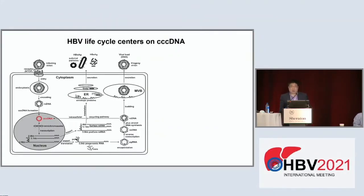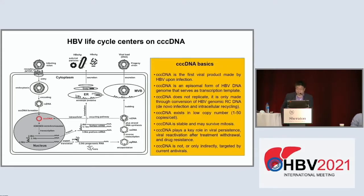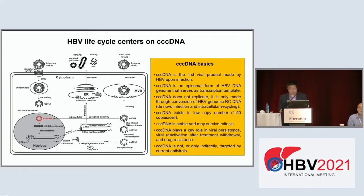As Thomas talked about this morning, cccDNA is the root of the HBV infection. To unroot the cccDNA, we start with cccDNA 101. cccDNA is the first viral product made by the virus upon infection. It is an episomal form of the HBV DNA genome that serves as a transcription template in the nucleus of the infected cell. cccDNA itself doesn't replicate — it is only made through conversion of the HBV genomic relaxed circular DNA (RC DNA) genome via de novo infection as well as the intracellular amplification pathway.